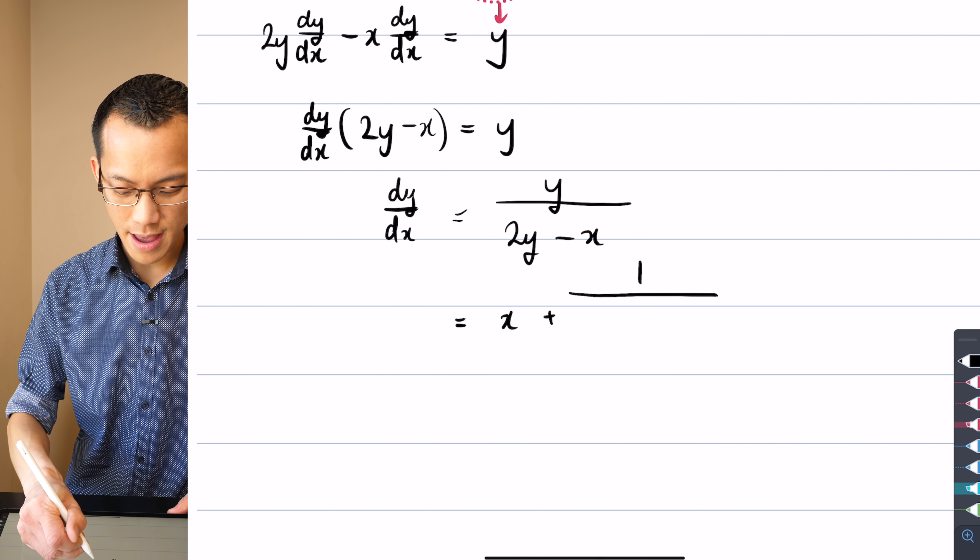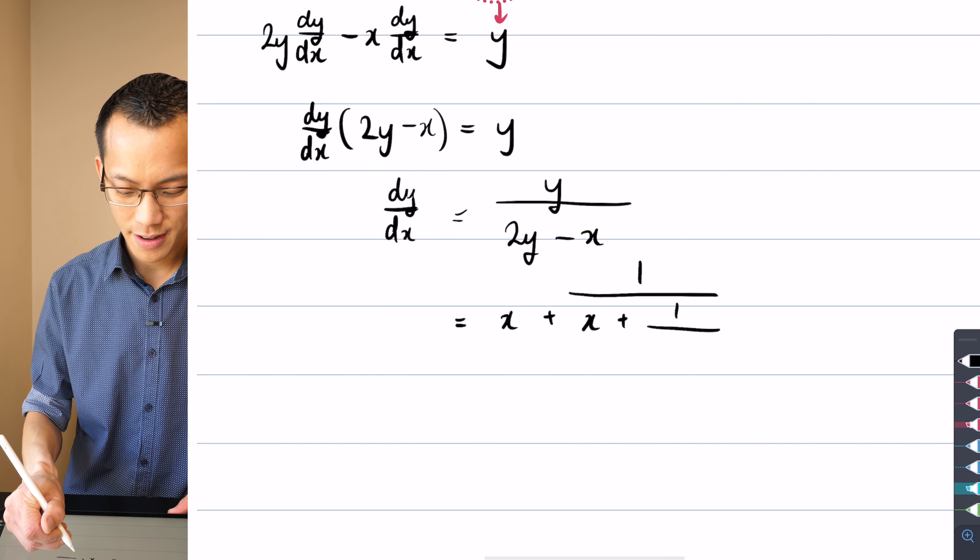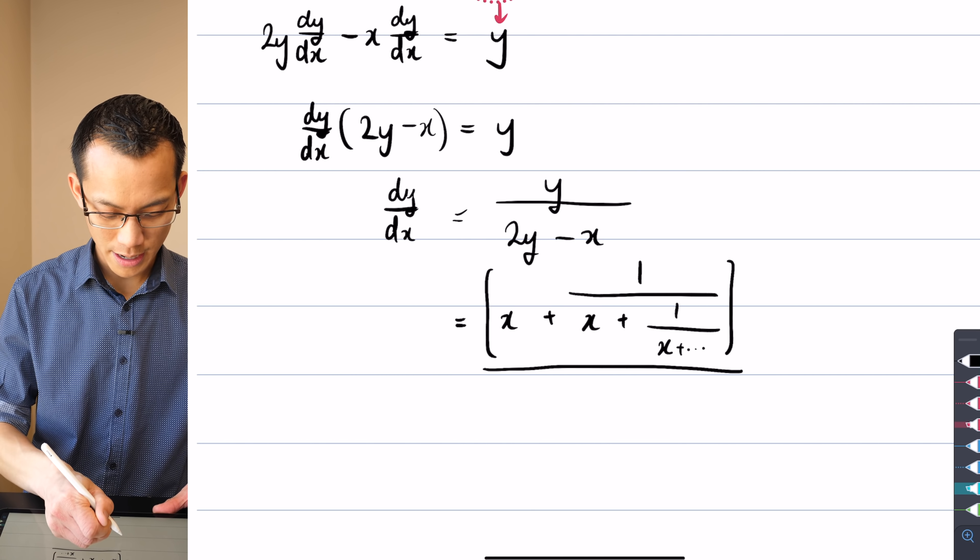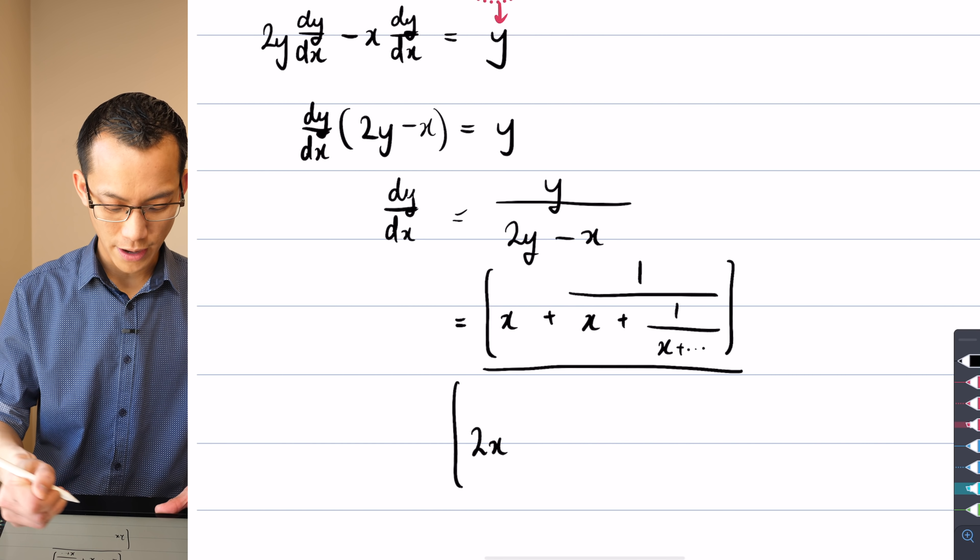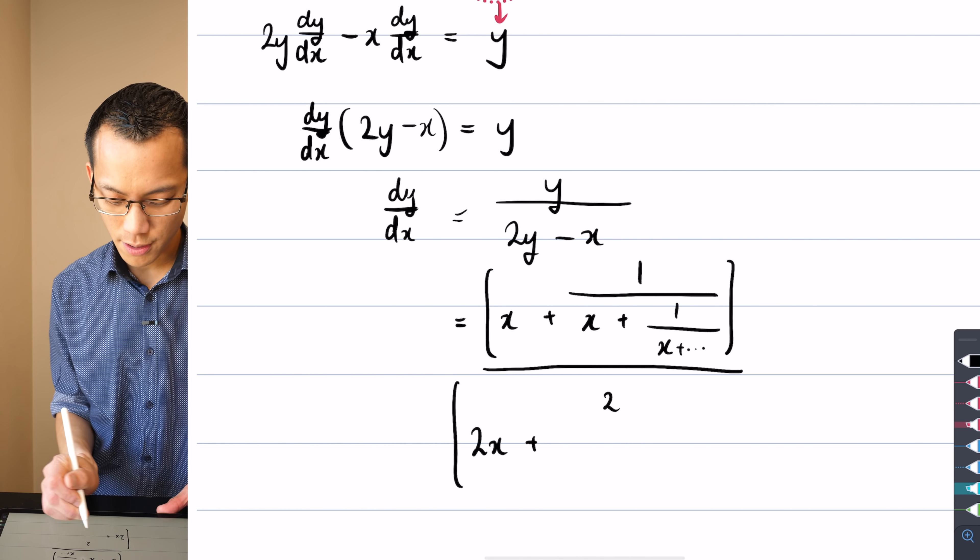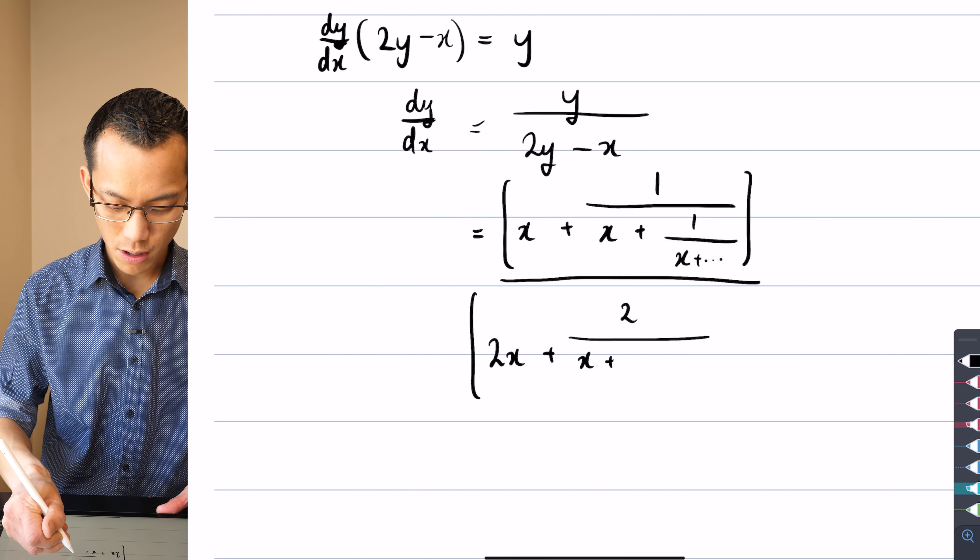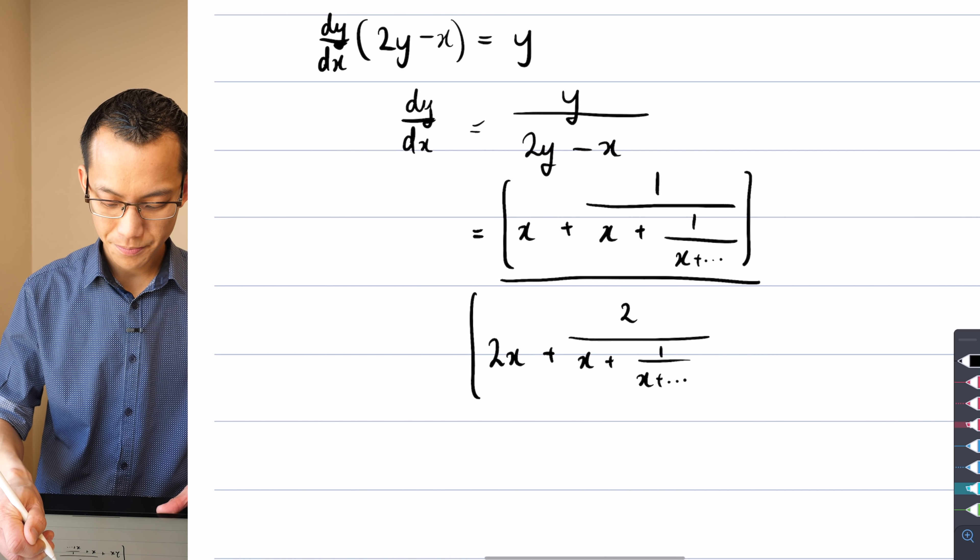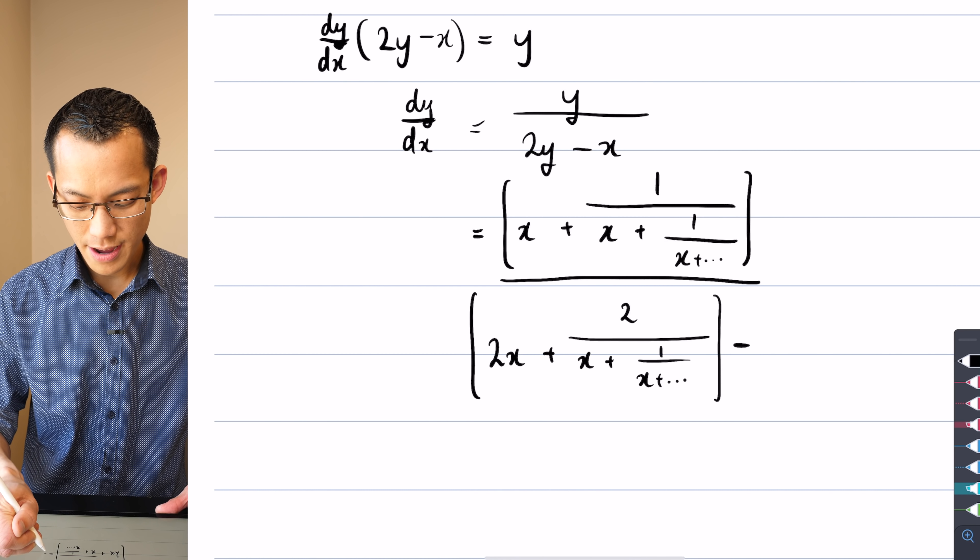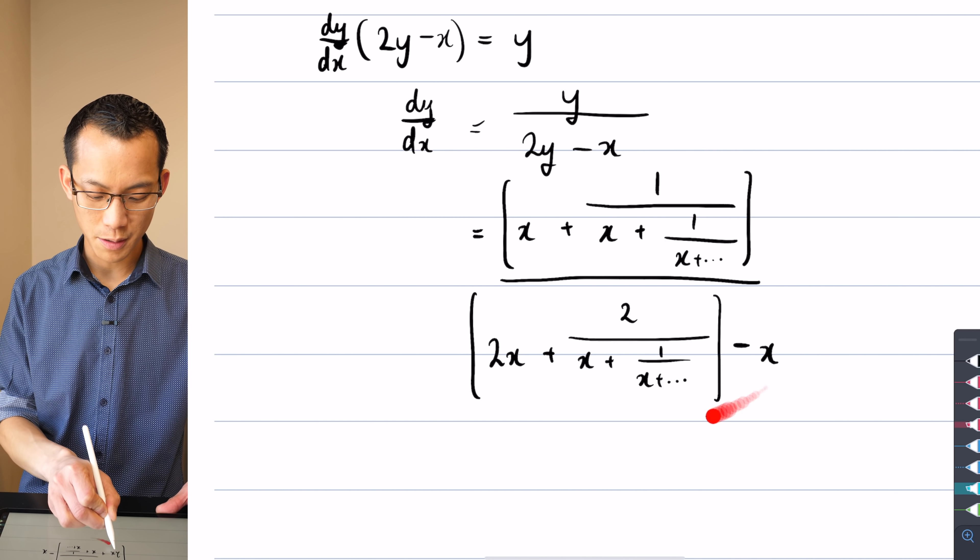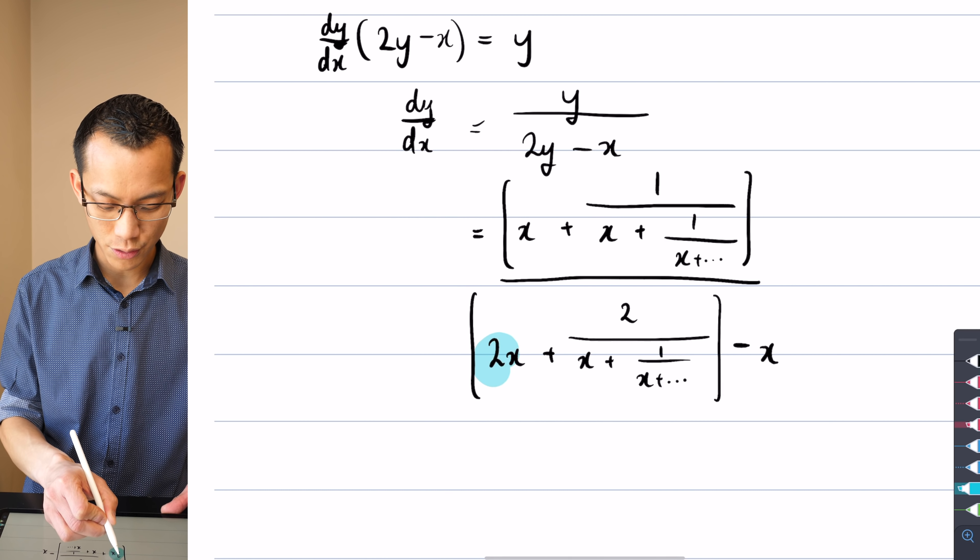What is y? Well, by definition it is x plus 1 over x plus 1 over, and I think that's enough for me to illustrate the pattern. So this is my numerator and then what I've got on the denominator is 2 of those, right? So it's going to be 2x plus 2 lots of, and everything on the denominator is unchanged. So this is still 1 over x plus dot dot dot. And then I subtract x.